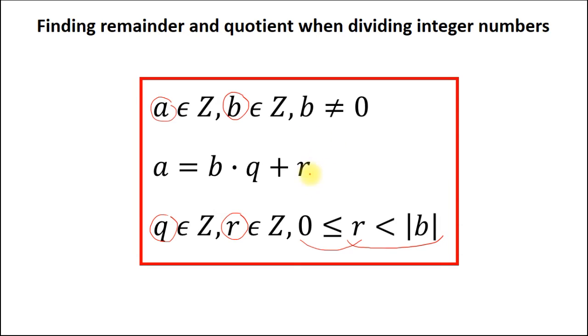Here a is called a dividend, b is called a divisor, q is the quotient and r is the remainder. One more important point is that b must not be equal to zero, because I hope you already know that division by zero is impossible.